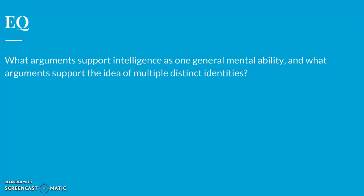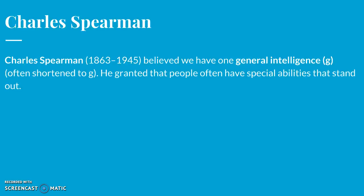The essential question: what arguments support intelligence as one general mental ability? That leads us to our first theorist, Charles Spearman, who had the idea of one general intelligence, sometimes shortened to just the letter G.